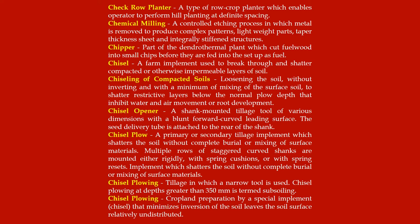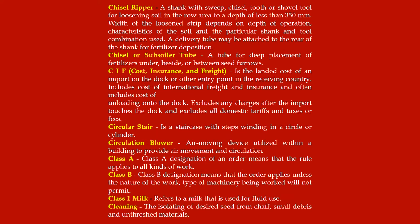Chisel plowing: tillage in which a narrow tool is used; chisel plowing at depths greater than 350 millimeters is termed subsoiling. Chisel plowing: cropland preparation by a special implement called a chisel, that minimizes inversion of the soil and leaves the soil surface relatively undisturbed.